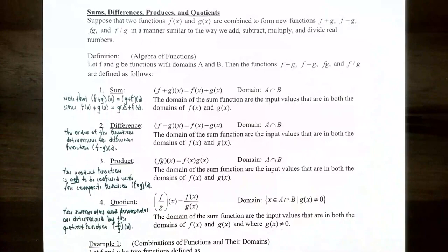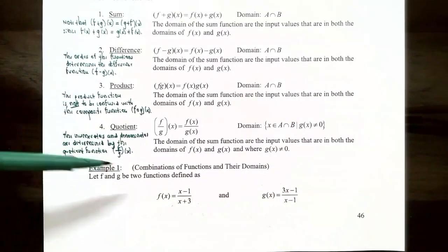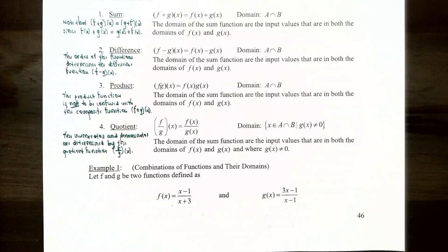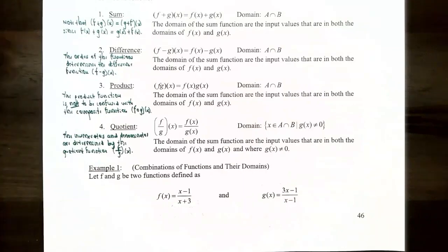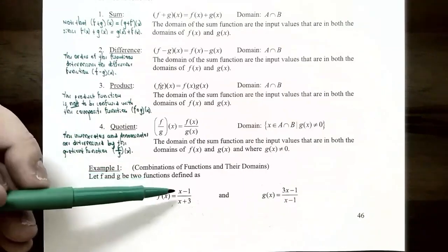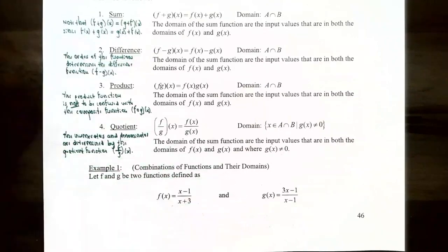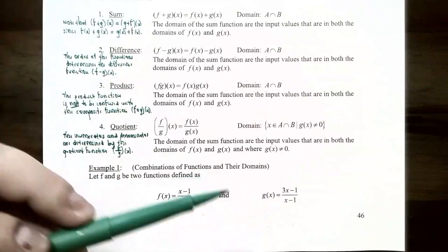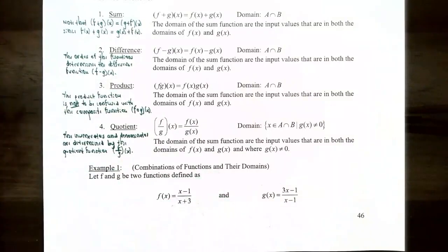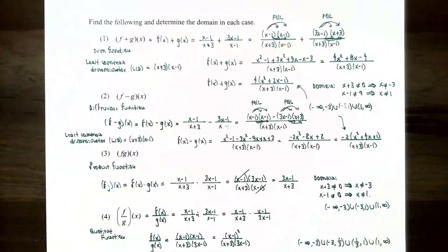For example one, we're going to form combinations of functions and find their domains. Let f and g be two functions defined as follows: f of x equals x minus one in the numerator divided by x plus three in the denominator, and g of x equals three x minus one in the numerator and x minus one in the denominator. Find the following and determine the domain in each case.